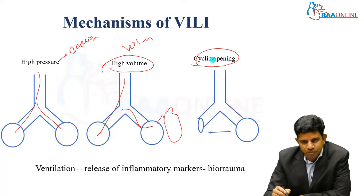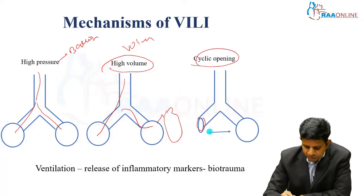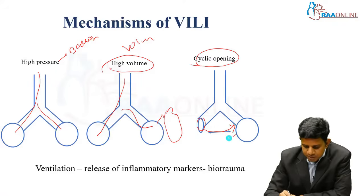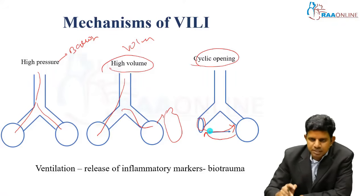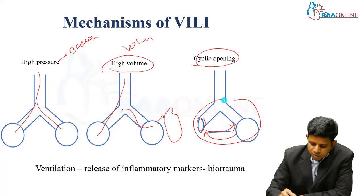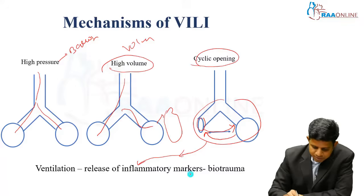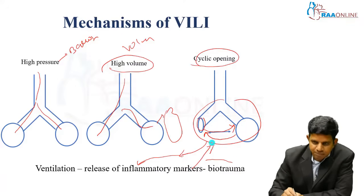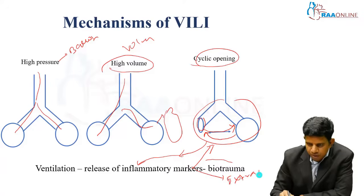The third mechanism is cyclic opening. For example, a collapsed alveolus opens during inspiration and then collapses again during expiration. This repeated opening and collapsing leads to release of inflammatory markers. These inflammatory markers damage the lung and also extra-pulmonary organs — this is called biotrauma.